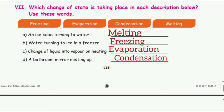Which change of state is taking place in each description below? 1. An ice cube turning into water — the answer is melting. 2. Water turning to ice in a freezer — the answer is freezing. 3. Change of liquid into vapor on heating — the answer is evaporation.